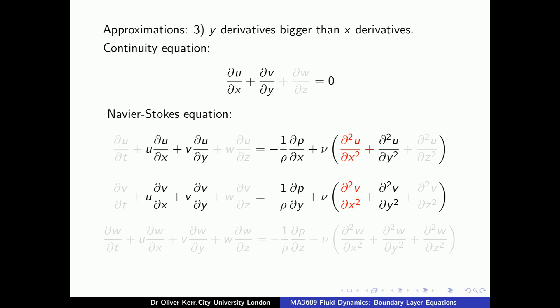However, in the viscous term for the u component of the Navier-Stokes equation, we have a d²u/dx² term and a d²u/dy² term. We would expect the d²u/dy² term to be much bigger than d²u/dx², and so we will remove the d²u/dx² term. In a similar way, we will remove the d²v/dx² term in the y component of the Navier-Stokes equation. The last approximation that we will use is that u is much bigger than v.